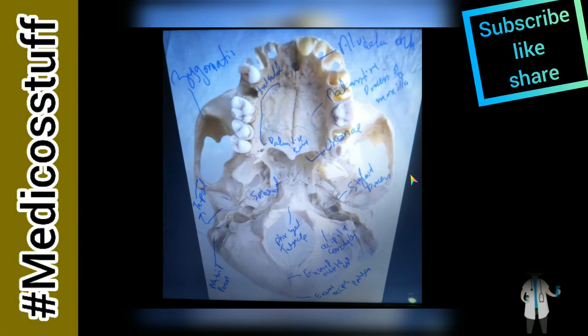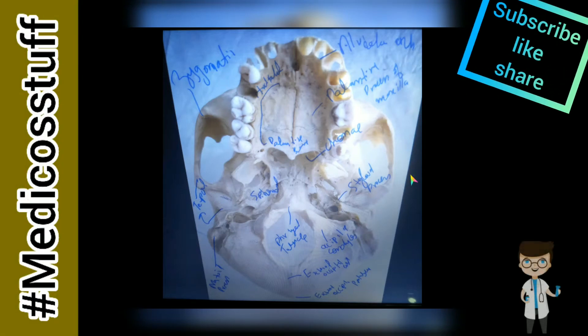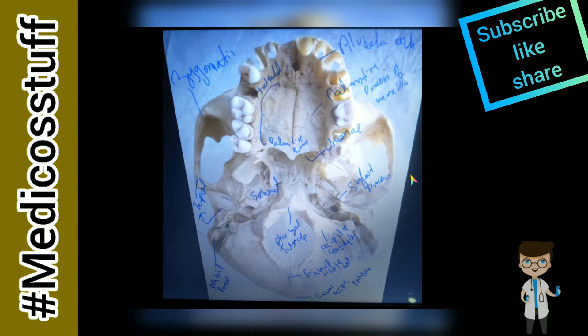Welcome to Medical Stuff. Today we will study the Norma Basalis: the outer part, inner part, its foramina, holes, condyles, and protuberance. All of these we will study in this video.